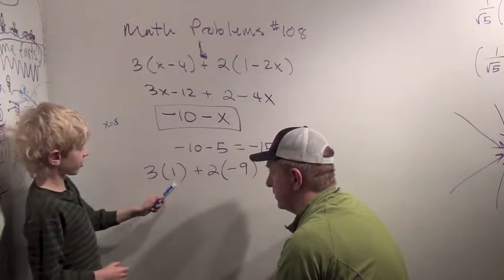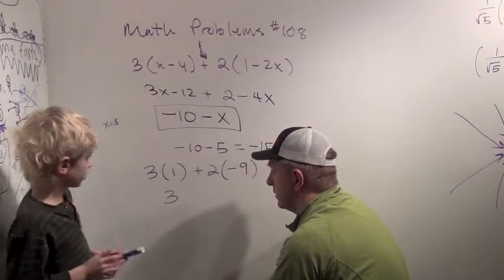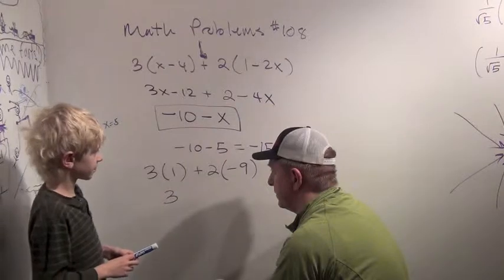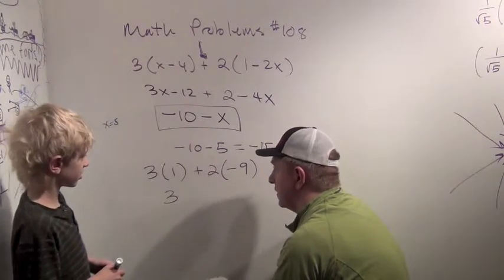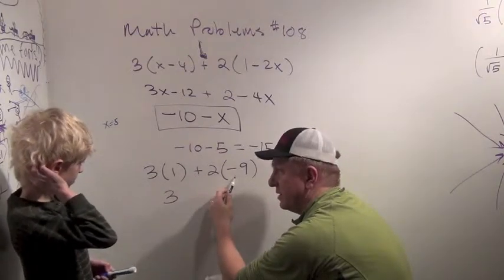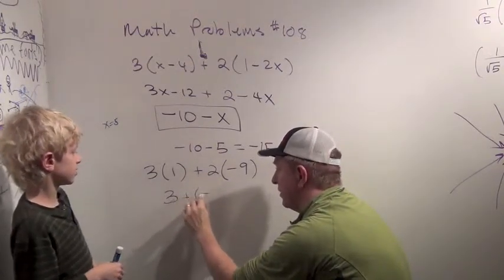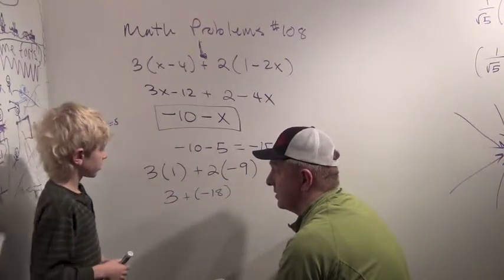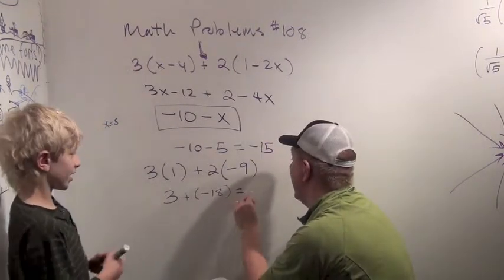So that's just gonna be three. And I think that's gonna be minus eighteen. Okay. Three plus minus eighteen. Don't forget the plus. Yep. That's important. Three plus minus eighteen. What's that? It's gonna be minus fifteen like we got.